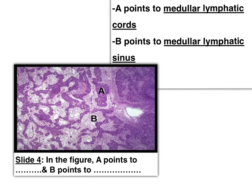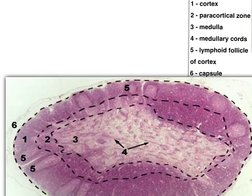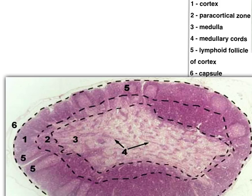Letter A points to the medullary lymphatic cord, while letter B is the area in between these cords — it is wide and pale, so it is the medullary lymphatic sinus. This is the lymph node because we can see the follicles at the periphery and in the medulla we have cords. So it is follicles on the surface and cords inside.